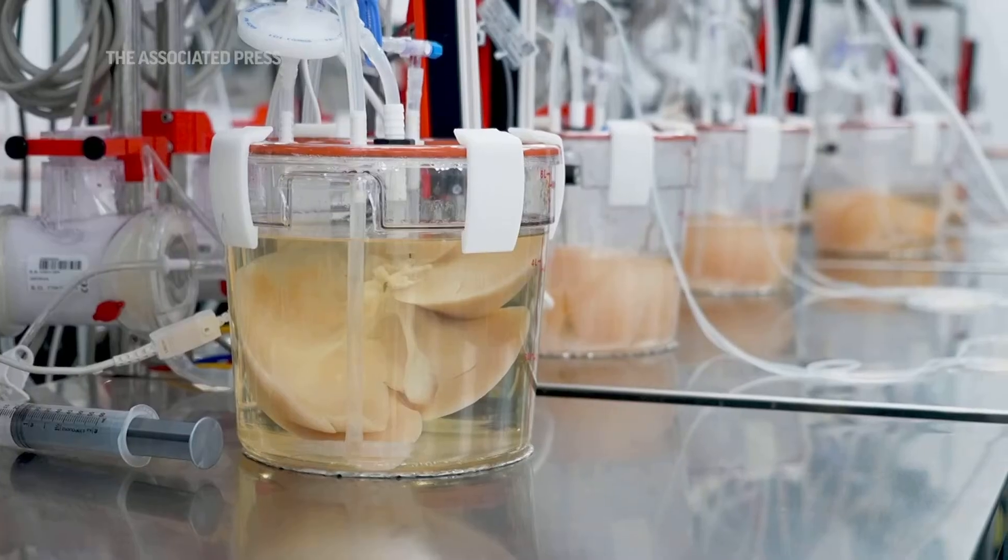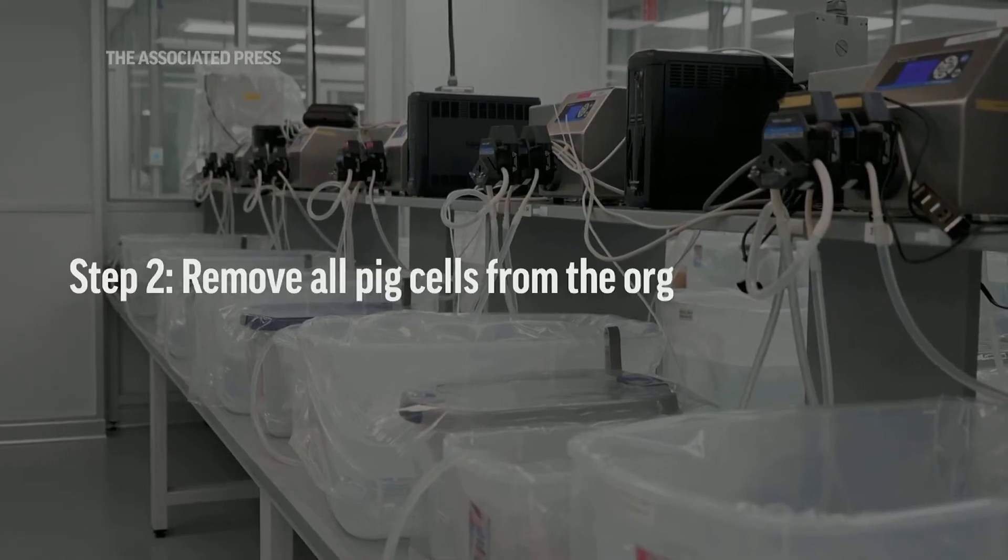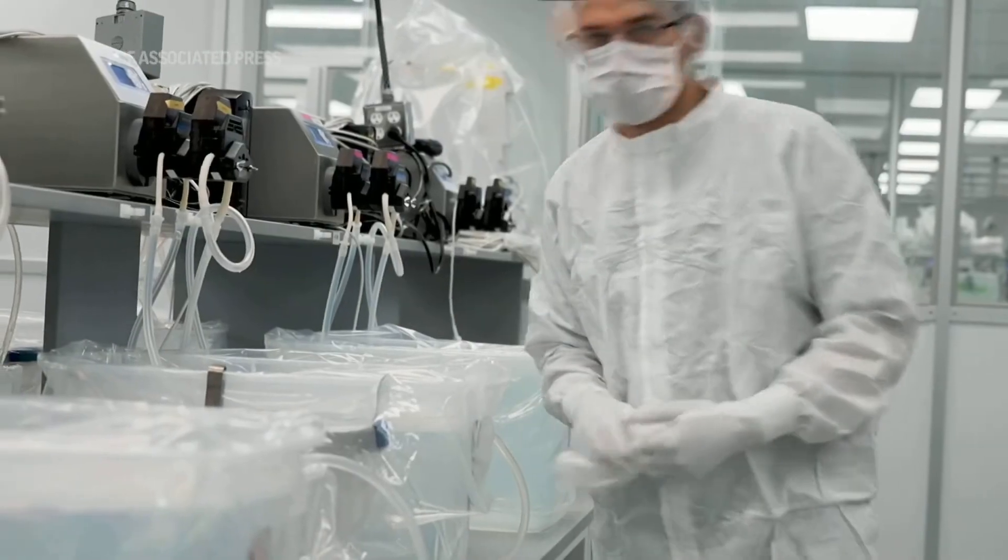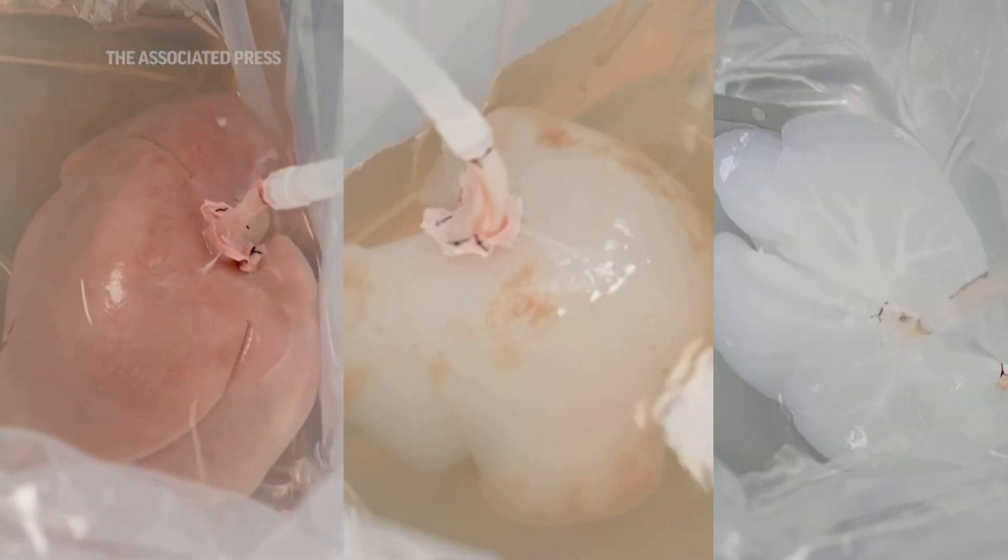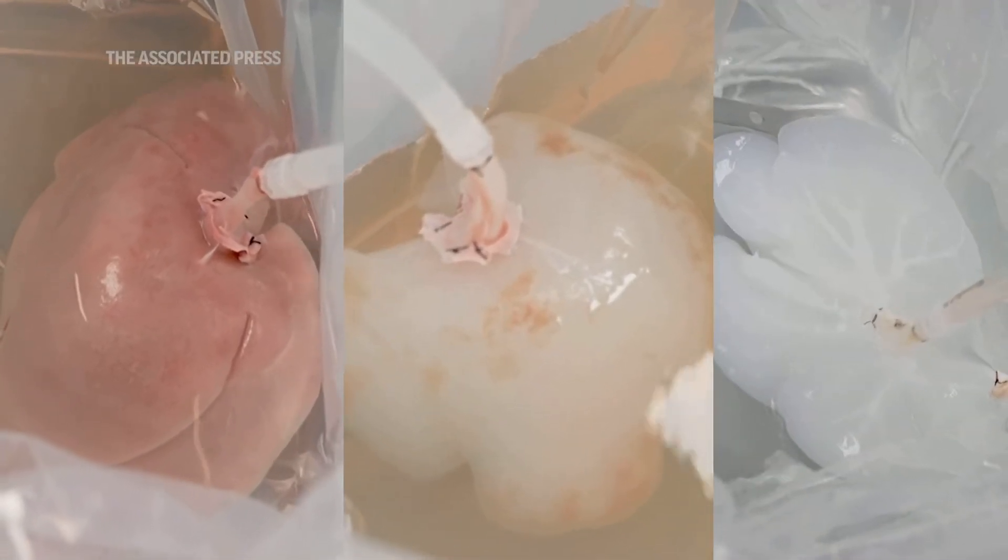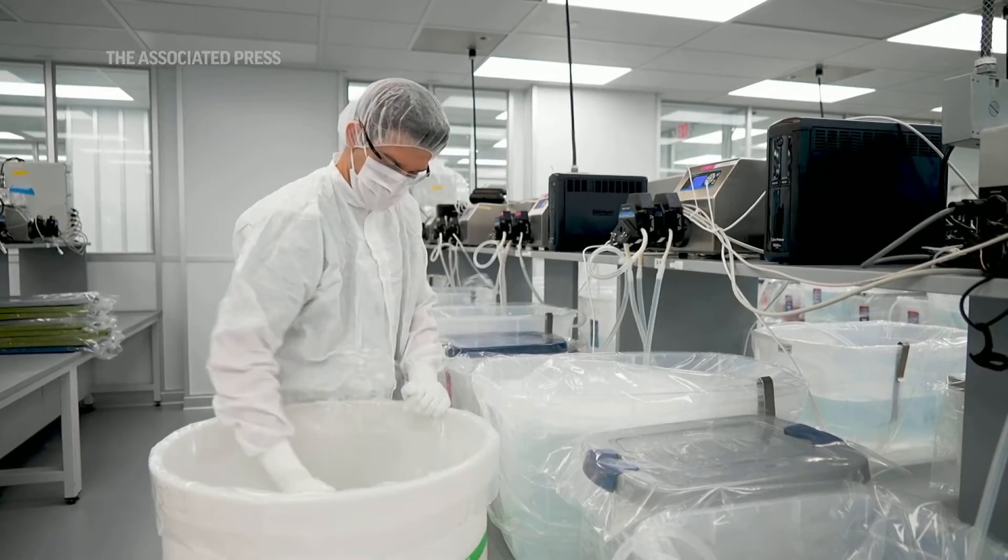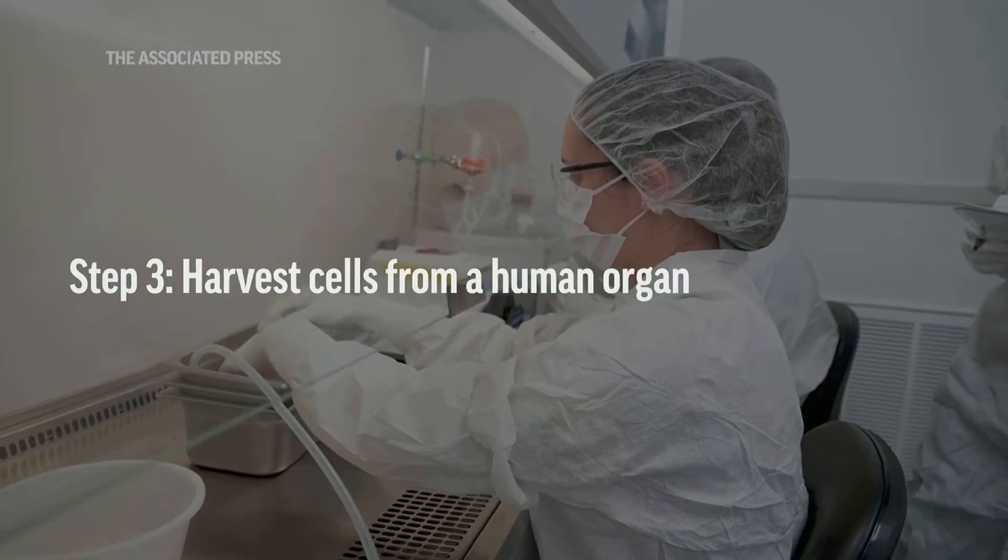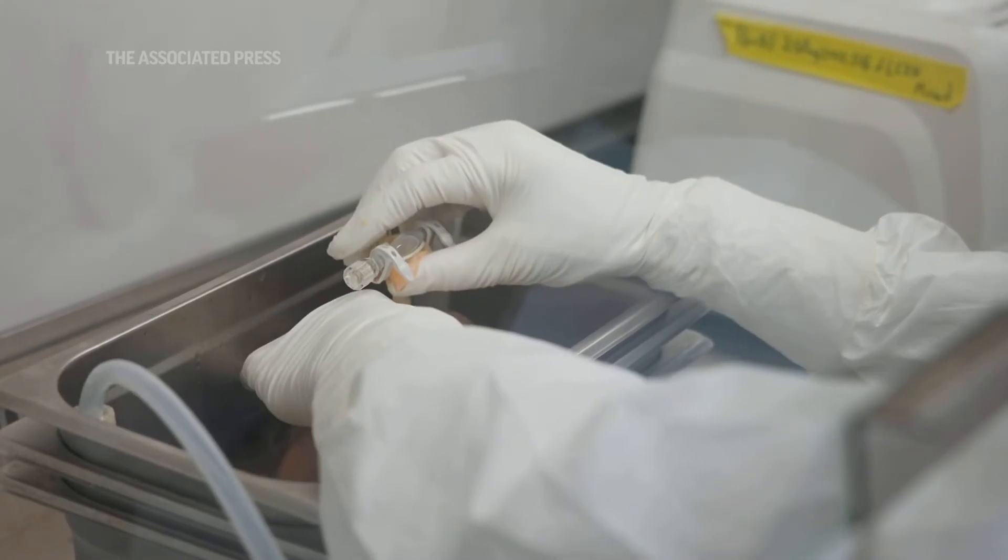We bring in that, whether it's a pig kidney or a pig liver. It's a process we call decellularization. It leaves the structure of the organ. You can essentially watch the cells being washed out of the matrix itself. Because we remove all the cells from that pig organ, our bodies don't see it as a pig organ anymore.